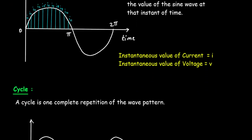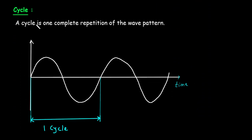Then next is cycle. A cycle is one complete repetition of the wave pattern. So from here to here, this is called one cycle. After that, it repeats again and again. So this is one complete cycle.